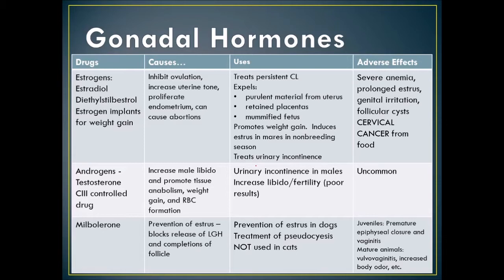Estrogen can treat persistent corpus luteum, expel purulent material from the uterus, and help remove retained placentas and mummified fetuses by promoting uterine contractions. It promotes weight gain as an implant, can increase muscle mass, induce estrus in mares during non-breeding season, and treats urinary incontinence — especially diethylstilbestrol.